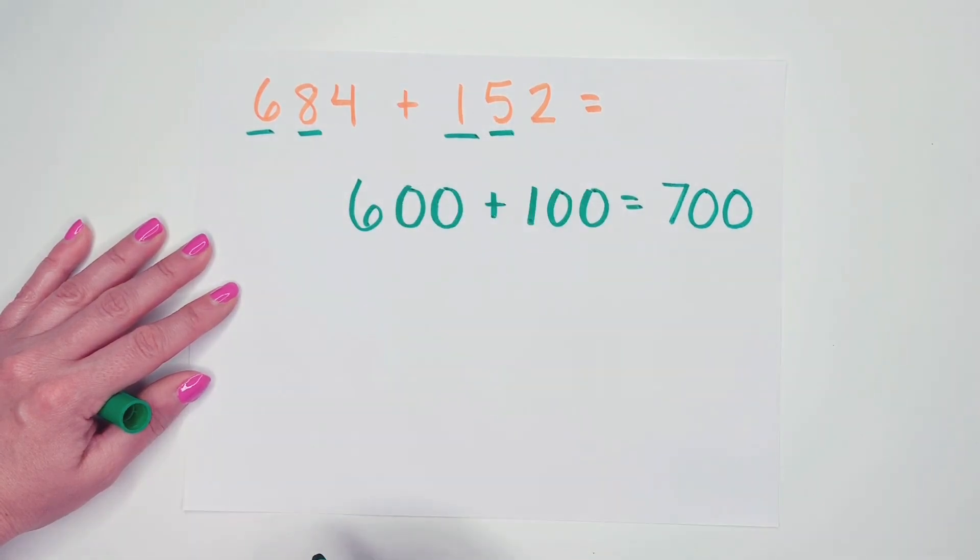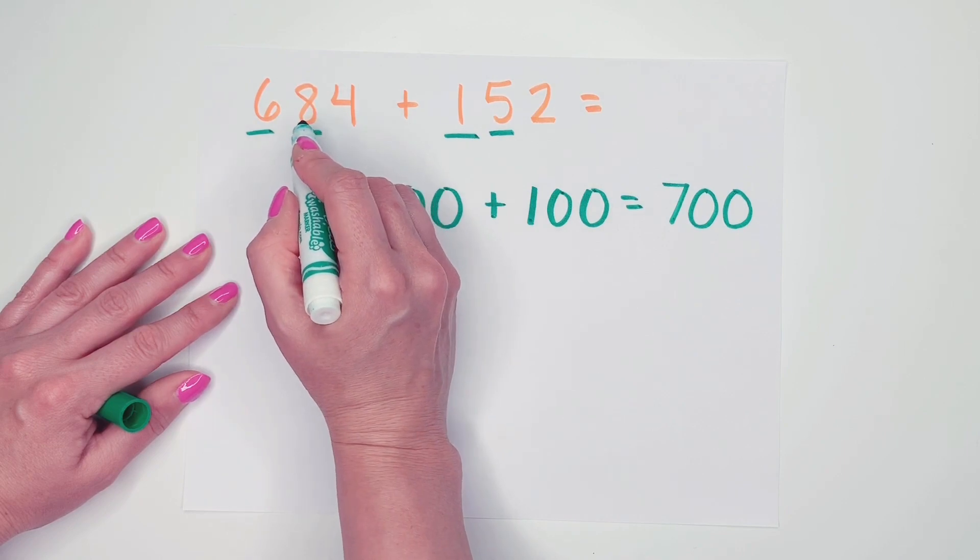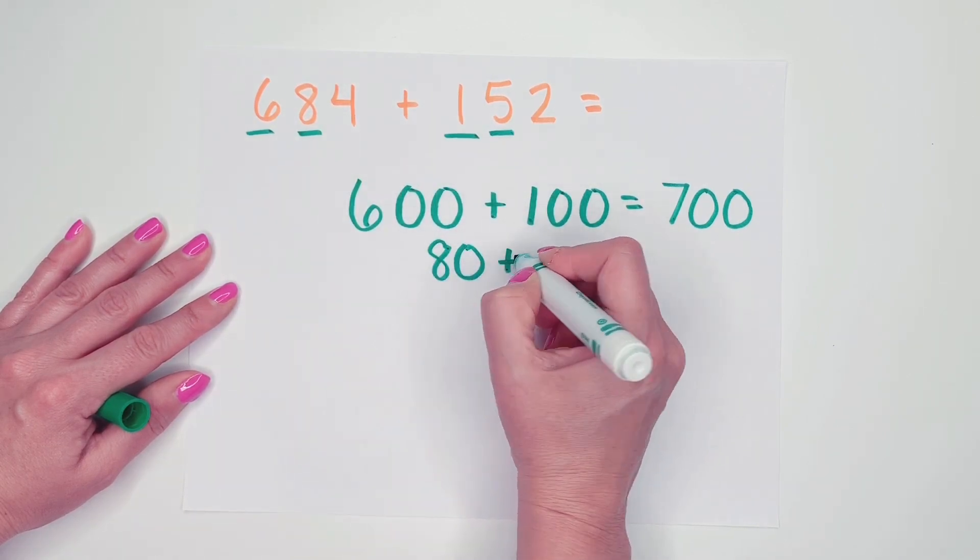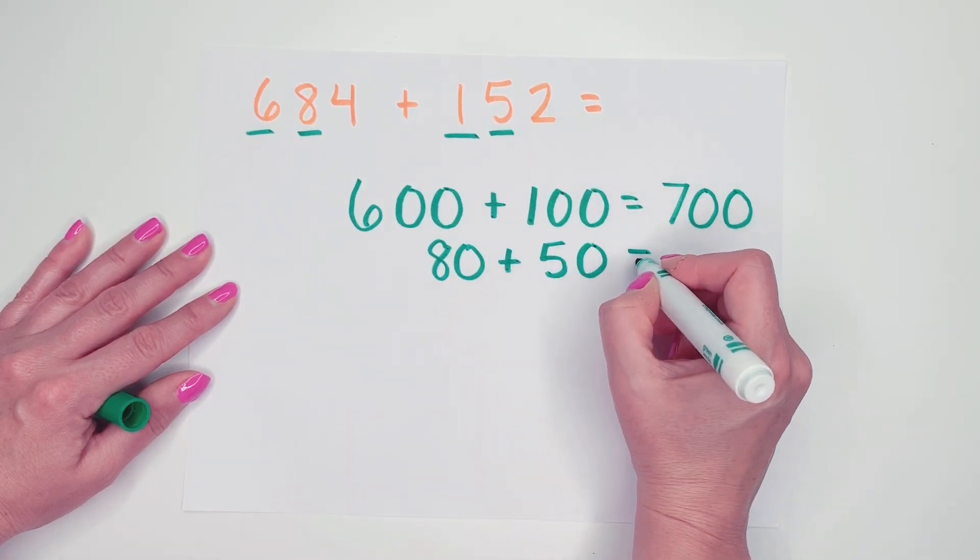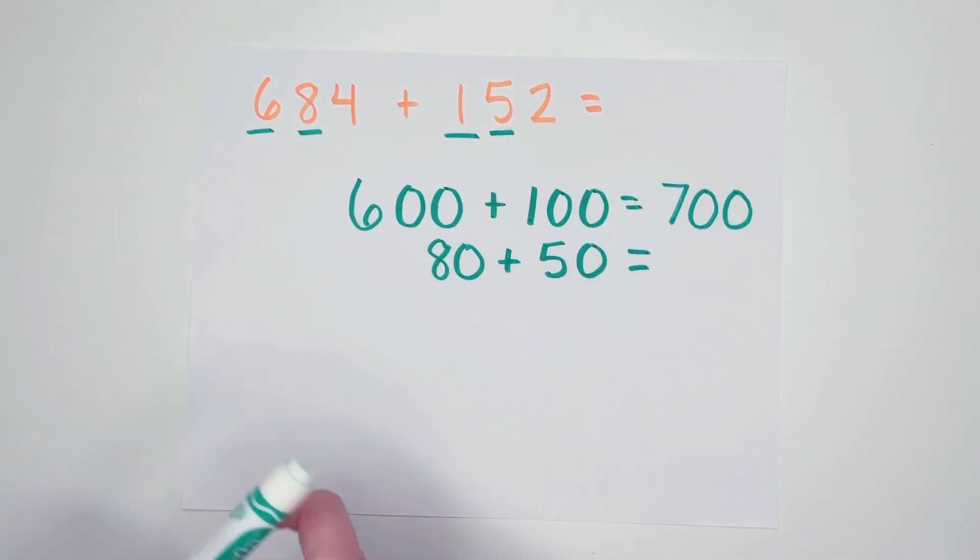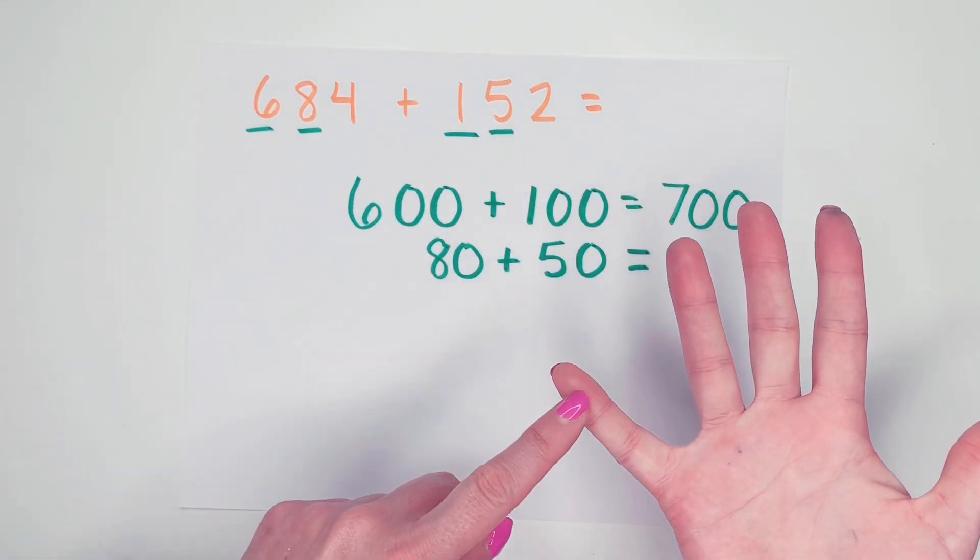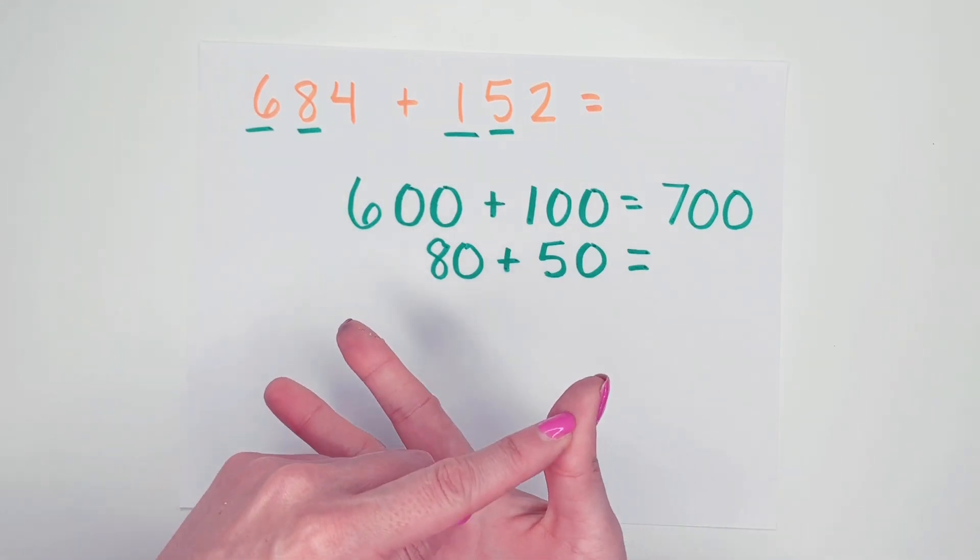Now I'm going to look at my tens. I have 8 and a 5. Well, the 8 really means 80. And the 5 really means 50. So now I'm going to add 80 plus 50. I'm going to put the big number in my head and count on by 10. So 80, 90, 100, 110, 120, 130.